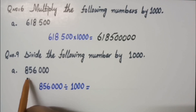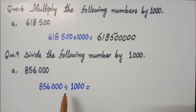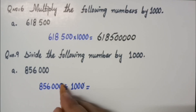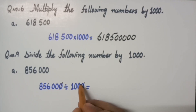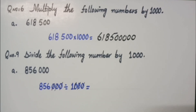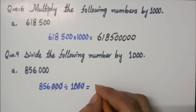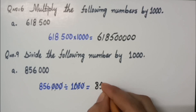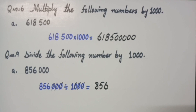Now let's solve question number 9: division by 1000. The digit we have is 856,000 divided by 1000. What was the rule? First cancel the zeros — one zero to the right and one to the left, then the second, then the third. The digit which remains is shifted to the left, and that is 856.